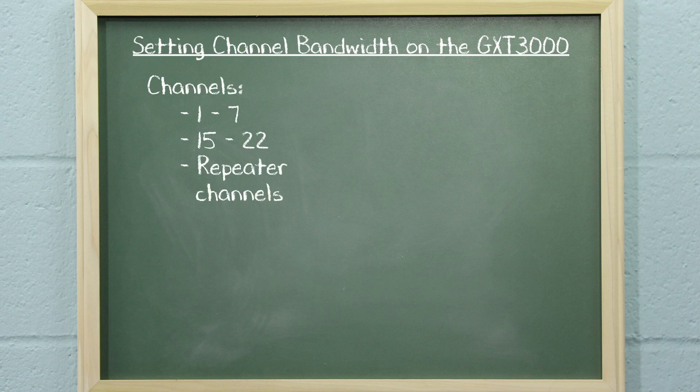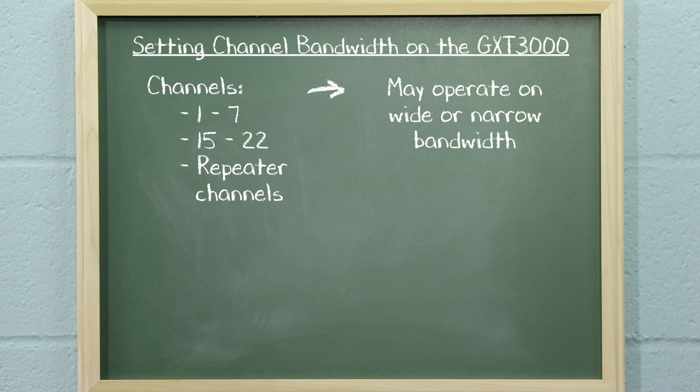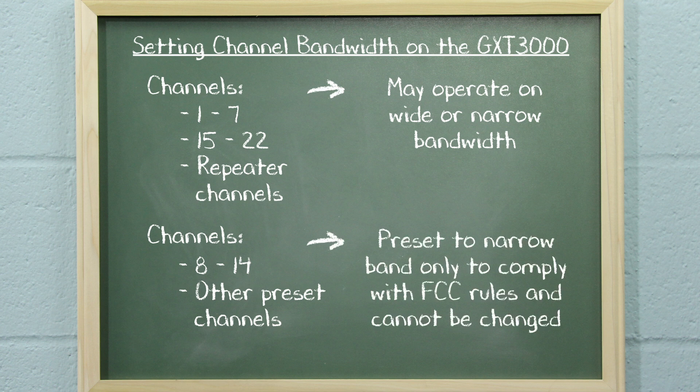It is important to note that channels 1 through 7, 15 through 22, and the repeater channels may operate on wide or narrow bandwidth. Channels 8 through 14 and the other preset channels are narrow band only and cannot be changed.